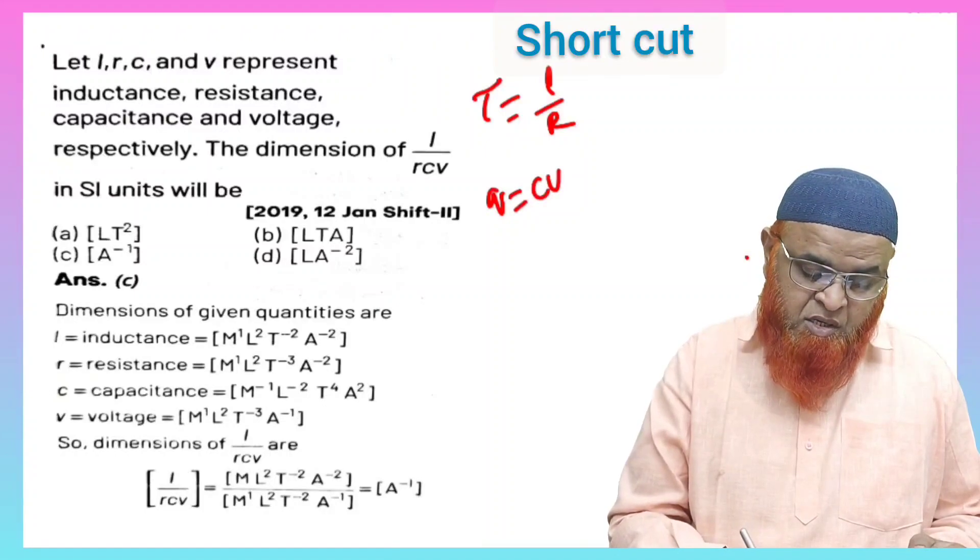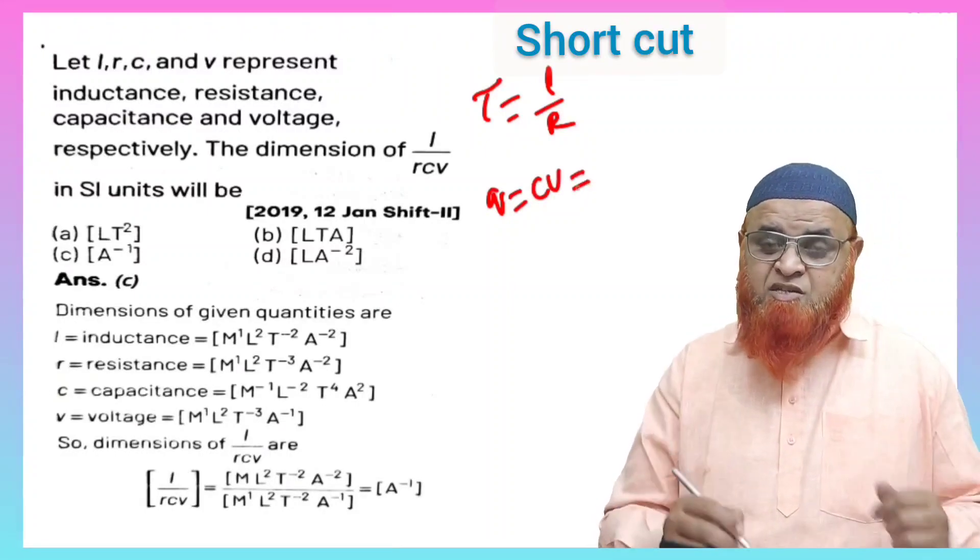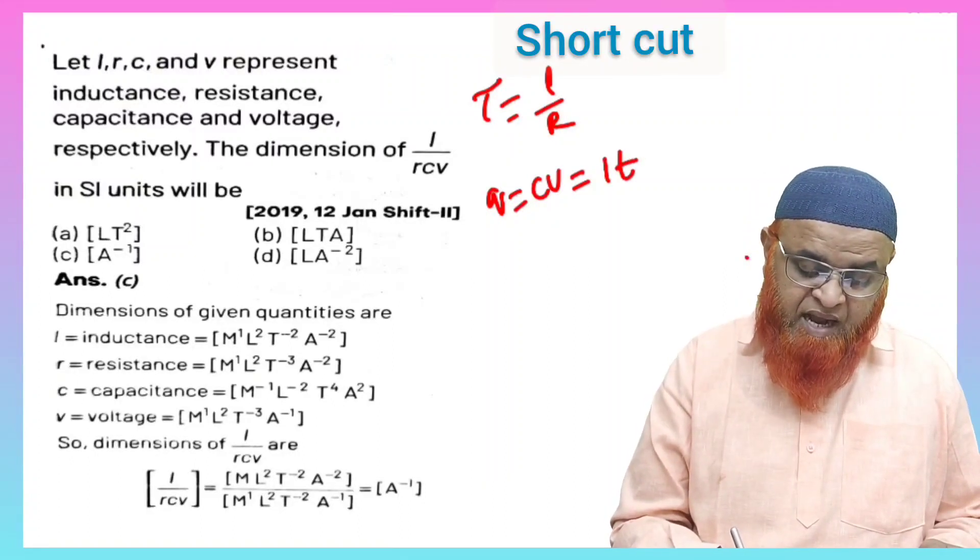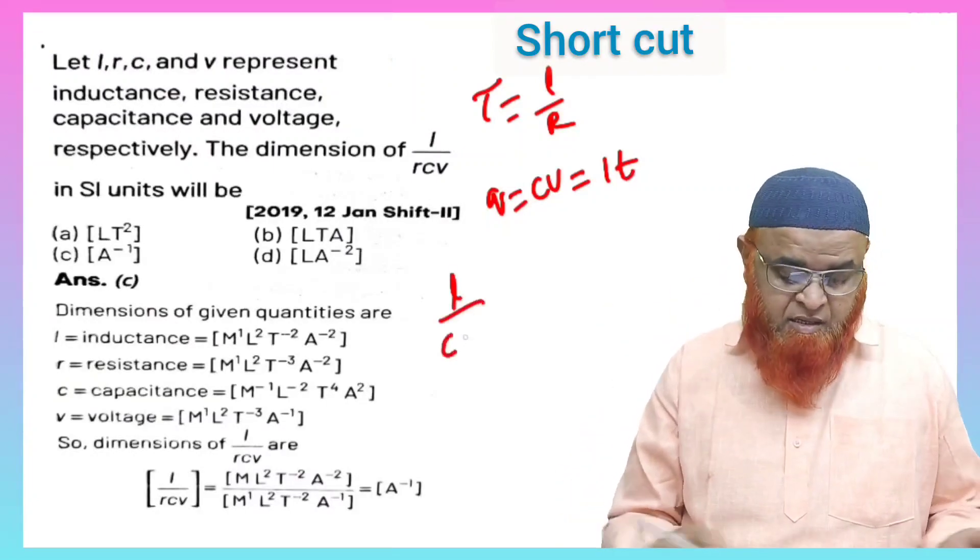And you also know that Q is equal to CV, charge is equal to capacitance into potential. And this can also be written as I into T because charge can also be taken as current into time here. That's it now.